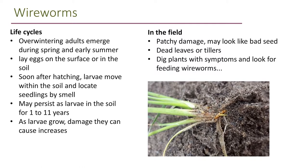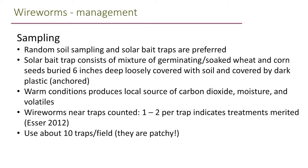In the field, wireworm damage is typically patchy and may look like a bad seed patch. If you look at individual plants and see dead leaves or dead tillers, dig them up and you're likely to find wireworms right down at the base of the plant feeding. Random sampling in the field is recommended; solar bait traps are preferred — much more efficient than just digging. The trap consists of a mixture of germinated, soaked wheat and corn seeds buried loosely and covered with dark plastic to warm it up. The warm conditions produce a local source of CO2, moisture, and volatiles that wireworms are attracted to. One to two wireworms per trap indicates treatments would be merited.